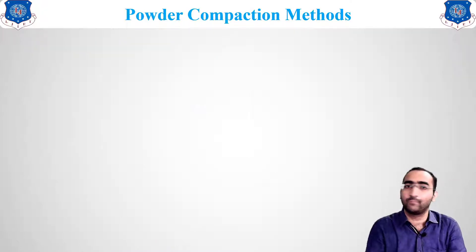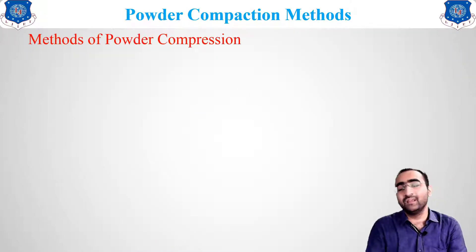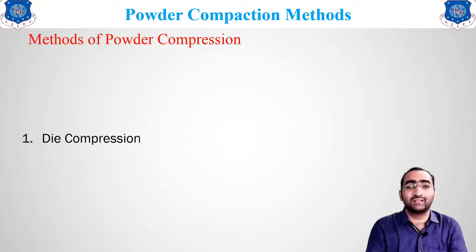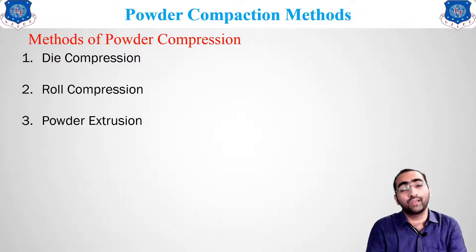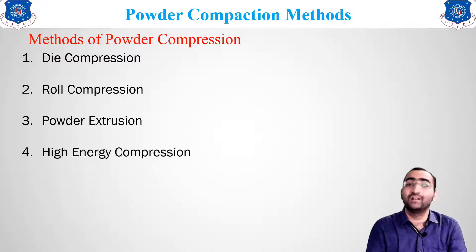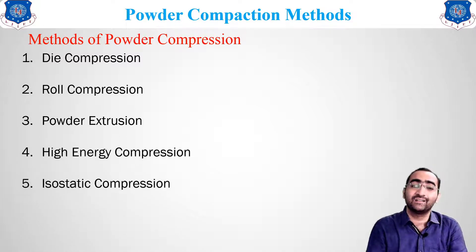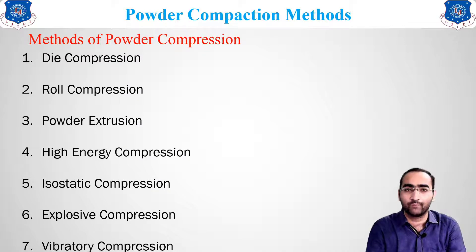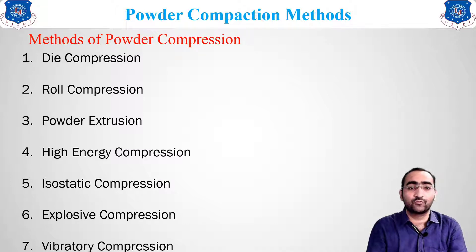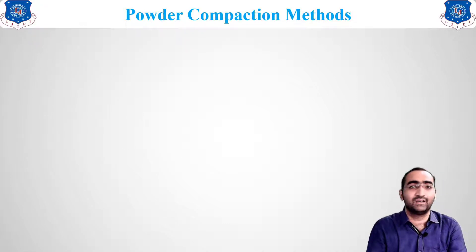There are seven techniques of powder compression: die compression, roll compression, powder extrusion, high energy compression, isostatic compression, explosive compression, and vibratory compression. Let us discuss all these different types in detail.